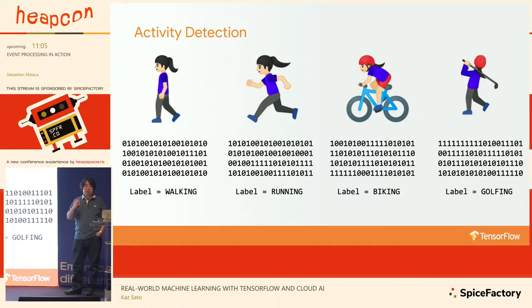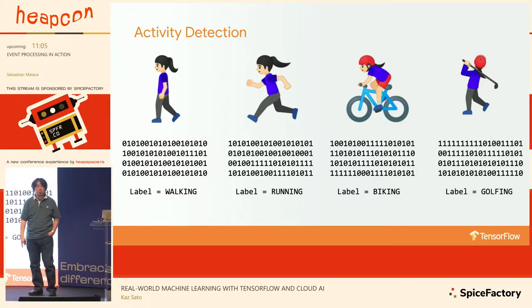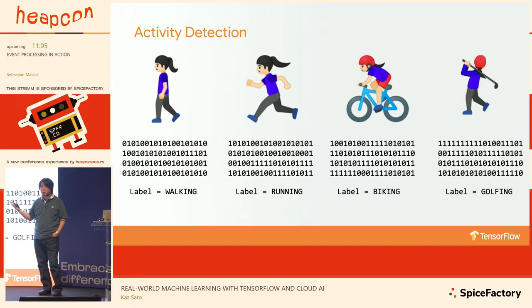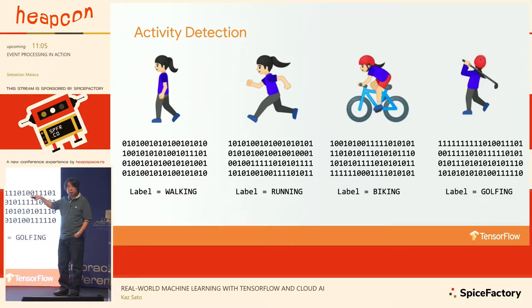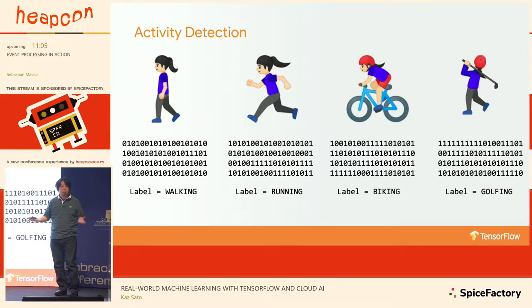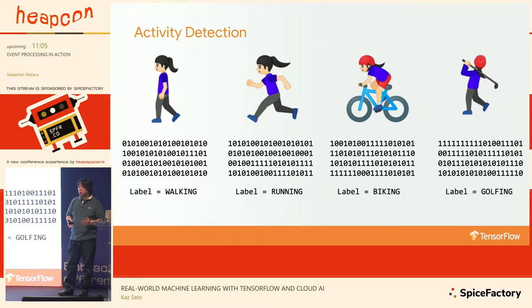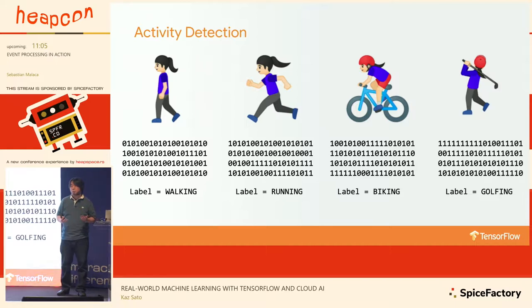Instead, at Google we're changing the way of programming and defining business logic. Rather than having humans define all the specs, we're letting computers find the best possible rules, patterns, definitions, and specifications based on patterns found from training data. So rather than writing our own program code, we gather tons of data — like GPS position data or motion sensor data — and let the computer find the different patterns for walking, running, biking, and golfing. This is a paradigm shift in programming.